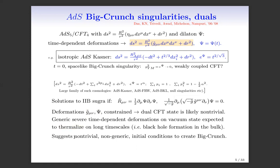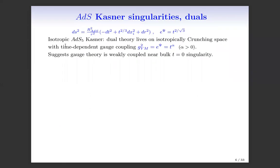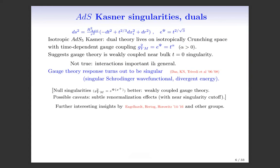Focusing on the ADS5 isotropic Kasner, the dual theory by the usual rules of ADS-CFT can be shown to live on an isotropically crunching space — a boundary metric with a time-dependent gauge coupling. This suggests the gauge theory dual is weakly coupled near the bulk singularity. But in a more detailed analysis this turns out to not be true. The interactions are actually important in general, and the gauge theory response turns out to be singular, with a singular Schrödinger wave functional and divergent energy.